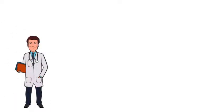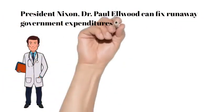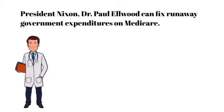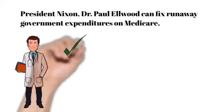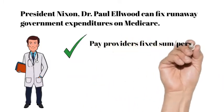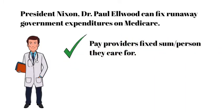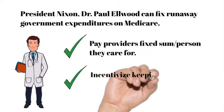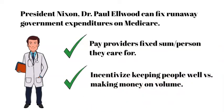Here is how capitation came about. President Nixon and his team were concerned about rising and out-of-control Medicare expenditures. Dr. Paul Elwood and others were consulted, leading to the idea of establishing HMOs with a reimbursement mechanism that paid providers a fixed sum based on patients under their care. This would set a limit on Medicare expenditures and emphasize the importance of keeping people healthy, since capitation put insurance companies and providers at risk for excessive healthcare expenditures.